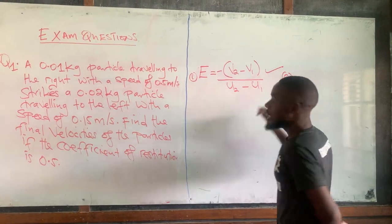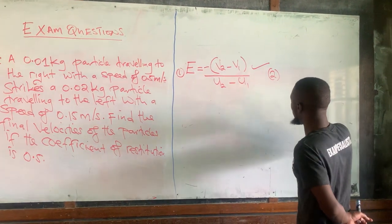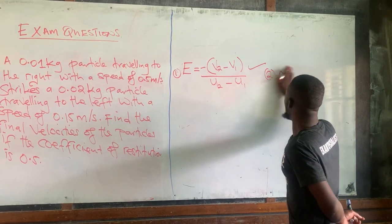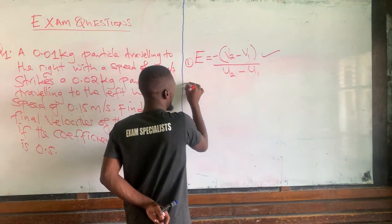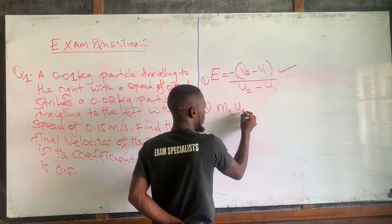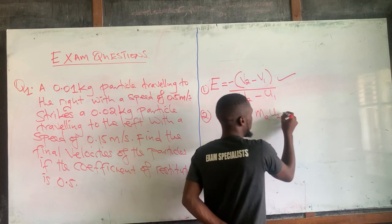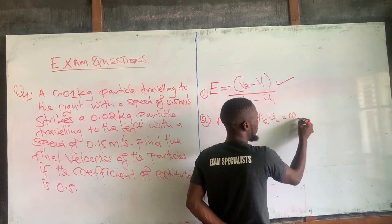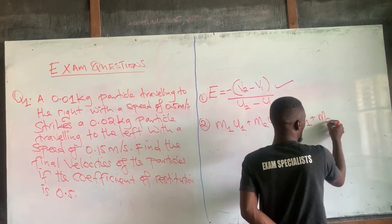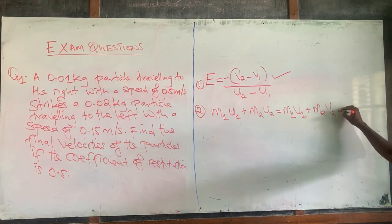Number two: you need the equation for momentum itself. The momentum equation is: m1·u1 plus m2·u2 equals m1·v1 plus m2·v2. So this is the second equation we need here. When you are asked such questions where the coefficient of distribution is given and you are told to find the final velocities, these are the two equations that you need.